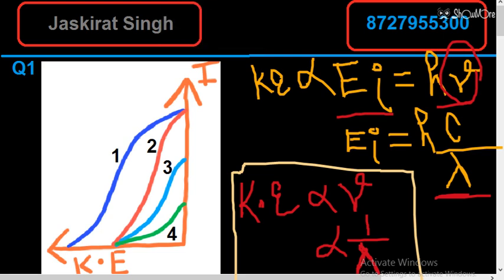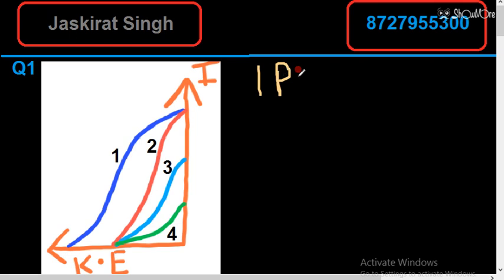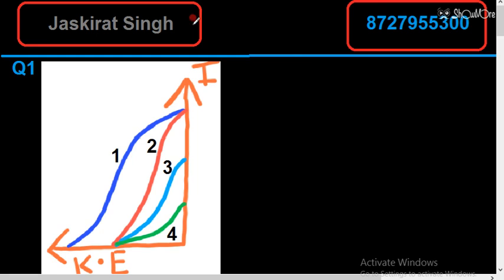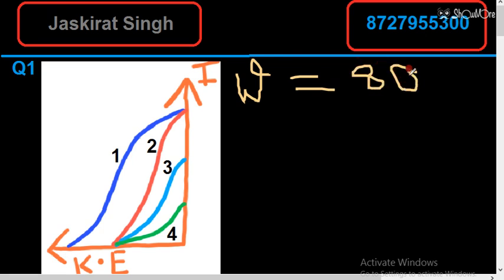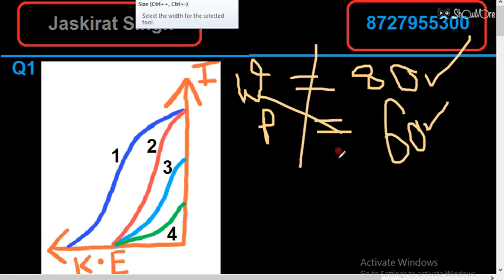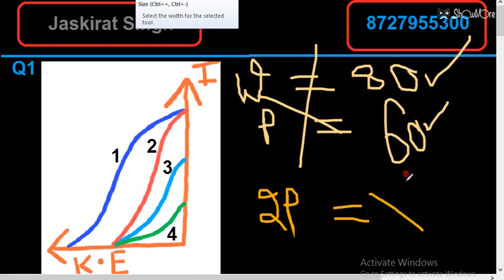The second important point: one photon of light will emit one electron. For example, if the work function is 80 joules and the energy of one photon is 60 joules, this photon cannot eject an electron because it doesn't meet the work function. Even combining two photons is not allowed — only one photon is permitted to emit one electron. This is a fundamental rule.